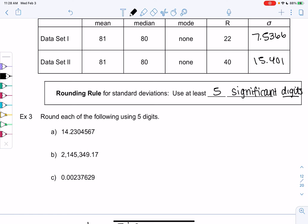So digits is not decimal places. Decimal places are after the decimal. Digits are just digits overall.